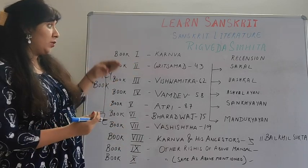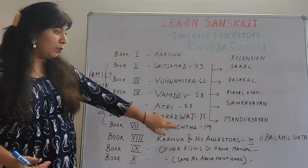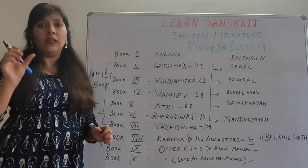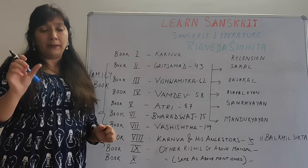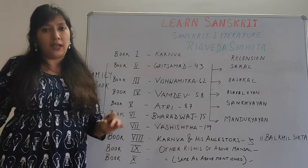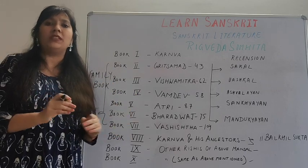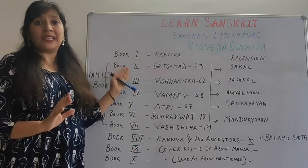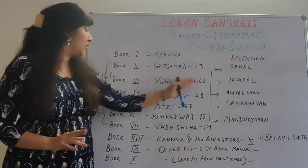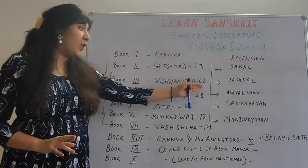Here I have written some numbers — these are the number of hymns per mandala. Every hymn has particular mantras attributed to it. Book two or the second mandala has 43 hymns, book three has 62 hymns, book four has 58, book five has 87, book six has 75, and book seven has 104.